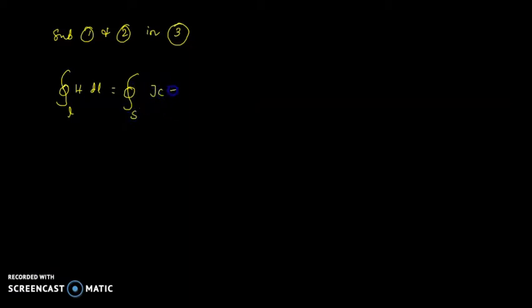This is JC plus JD into ds. This becomes surface integral sigma E plus the partial derivative of electric field density D ds. So this is the Maxwell equation in integral form.